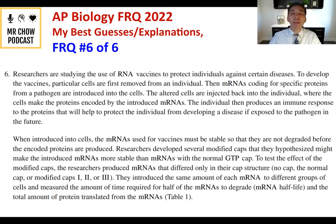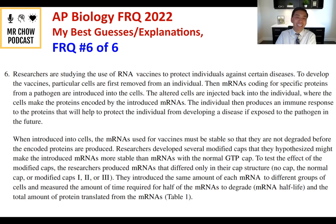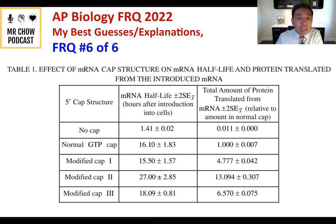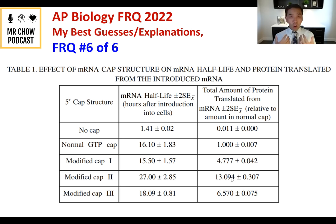Researchers developed several modified caps hypothesized to make mRNAs more stable than those with a normal GTP cap. They produced mRNAs differing only in cap structure: no cap, normal cap, and modified caps one, two, and three. They introduced the same amount of mRNA to different cell groups and measured mRNA half-life and total protein translated. Looking at the data: modified cap two and modified cap three have the highest numbers, with modified cap two producing the most protein.